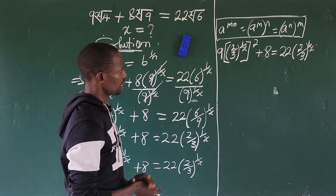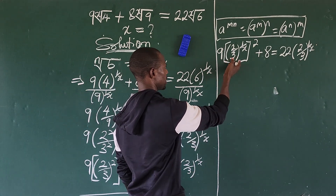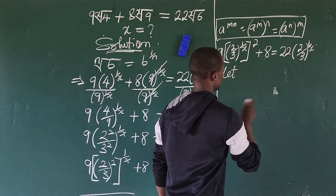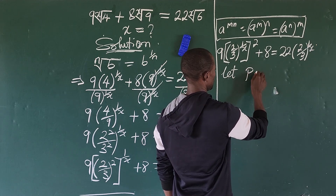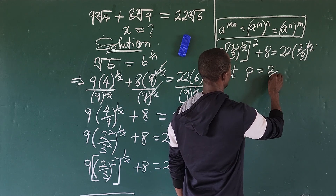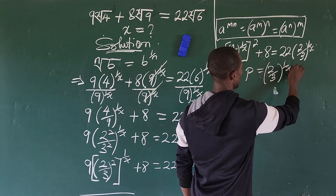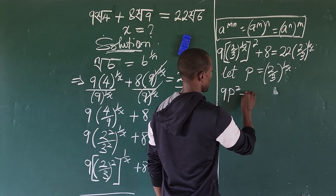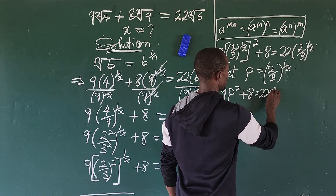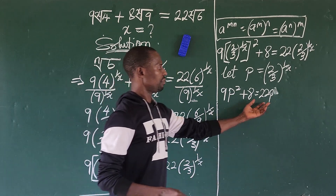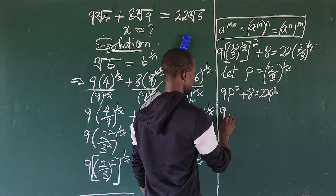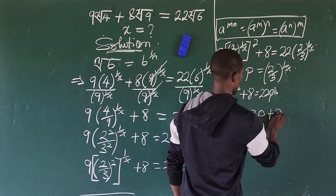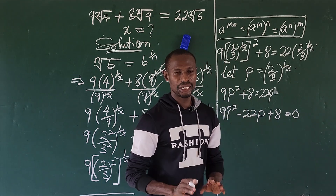We discover that the same expression appears repeatedly. So we make a substitution: let p equal (2 over 3) to the power of 1 over x. This gives us the equation: 9p squared plus 8 equals 22p. Moving everything to one side: 9p squared minus 22p plus 8 equals zero. This is a quadratic equation.